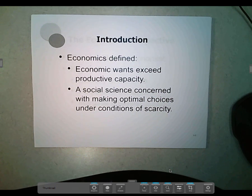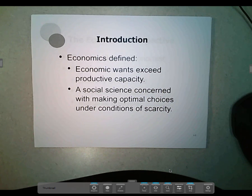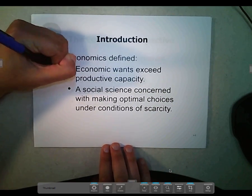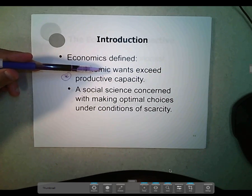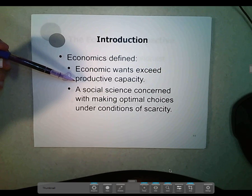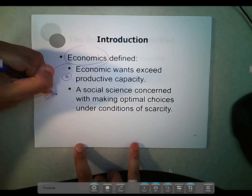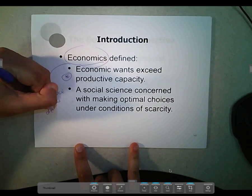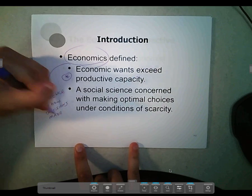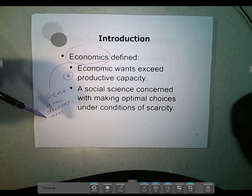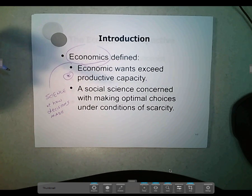Economics is largely a social science — in the UH system it's considered a social science, though in other schools it might be considered more business. I've taught economics both within a business school and within a social science department. The basic idea is that all of our wants and needs exceed what we have the ability to produce or the resources to make. How do we make that choice? That is what economics is — a science of how decisions are made, by individuals and by firms.